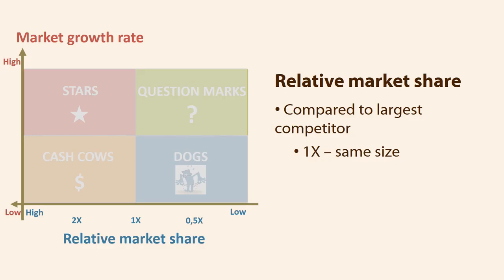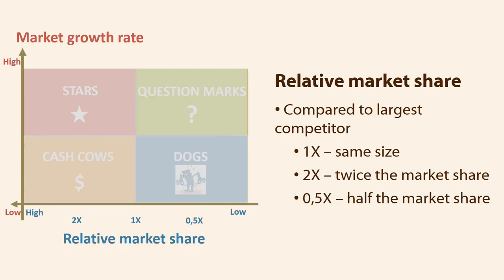One's business area has as much share as one's biggest competitor. To the left from 1x, one's relative market share grows relative to the largest competitor, and 2x means one has twice the market share of the largest competitor. Correspondingly, we get less market share when we move right along the axis, and 0.5x means we have half the market share of our largest competitor. Therefore, the arrow on the X-axis goes from low on the right side to high on the left side — the opposite direction to what we would normally expect on the X-axis.